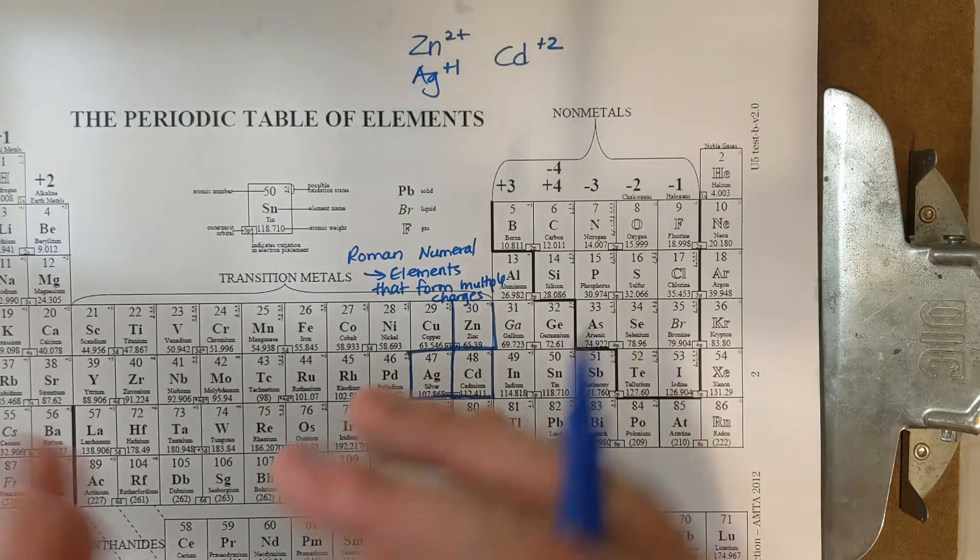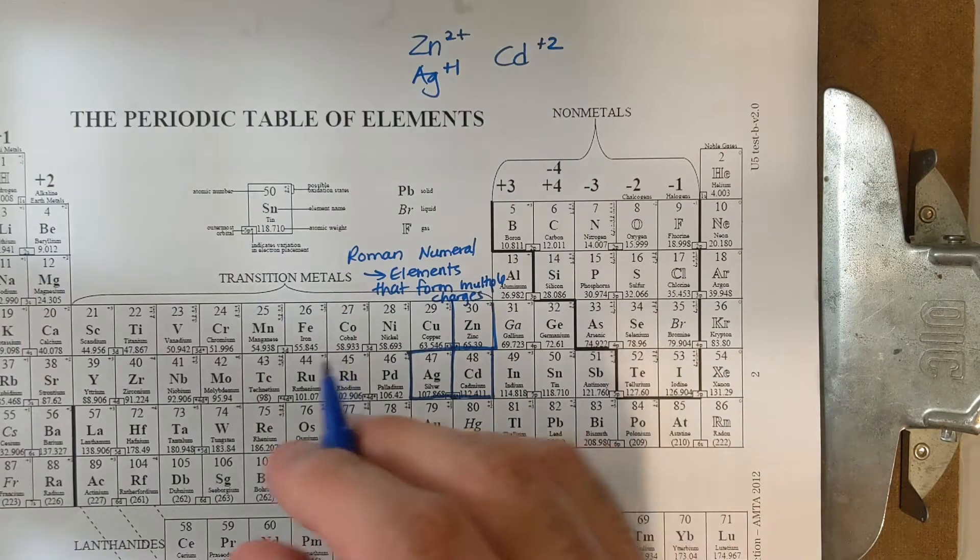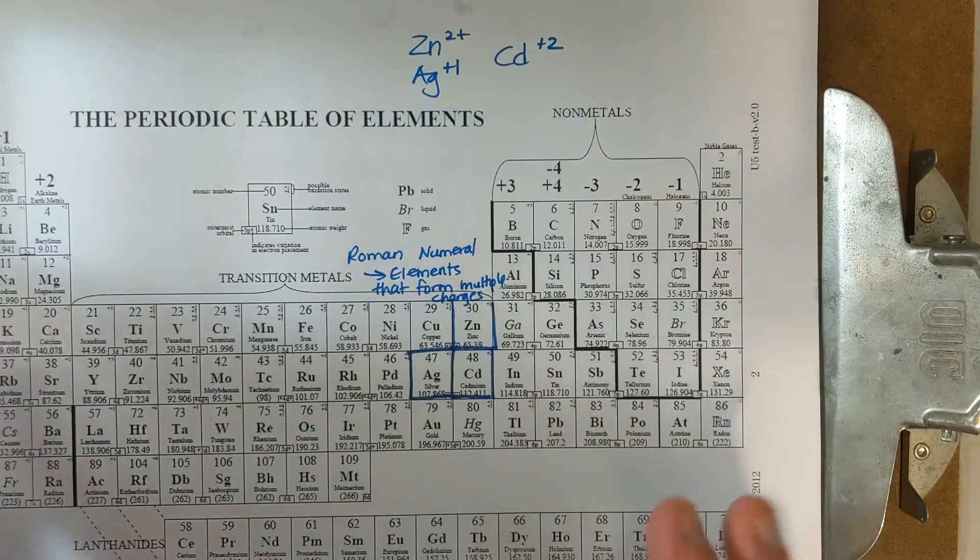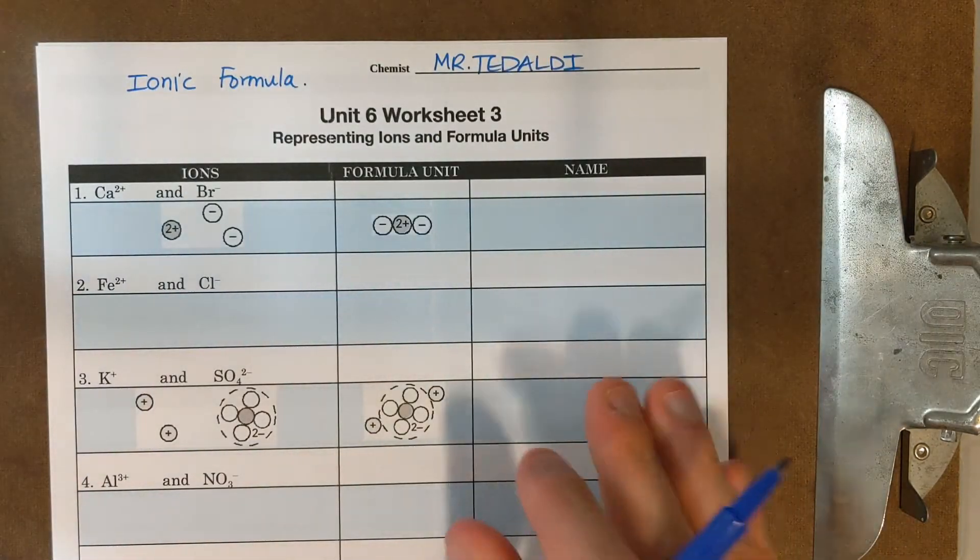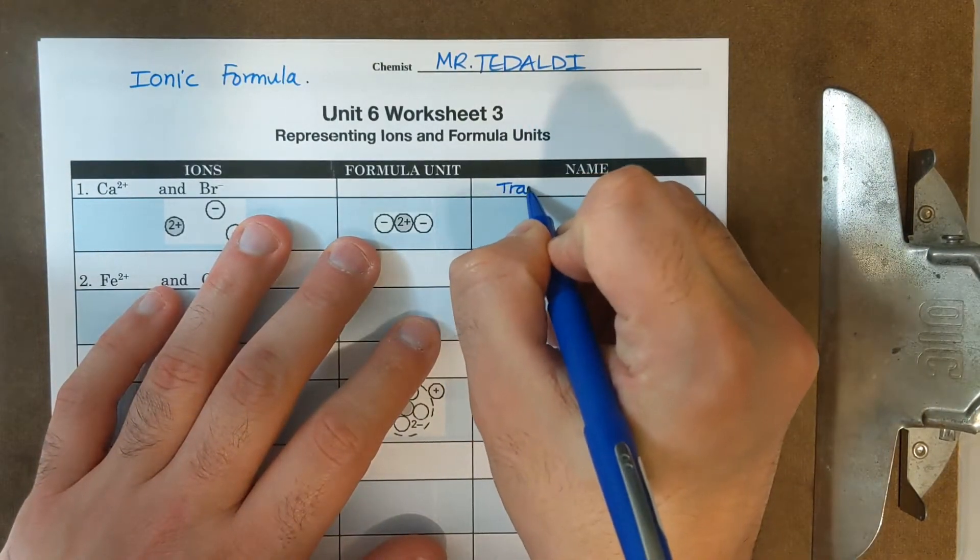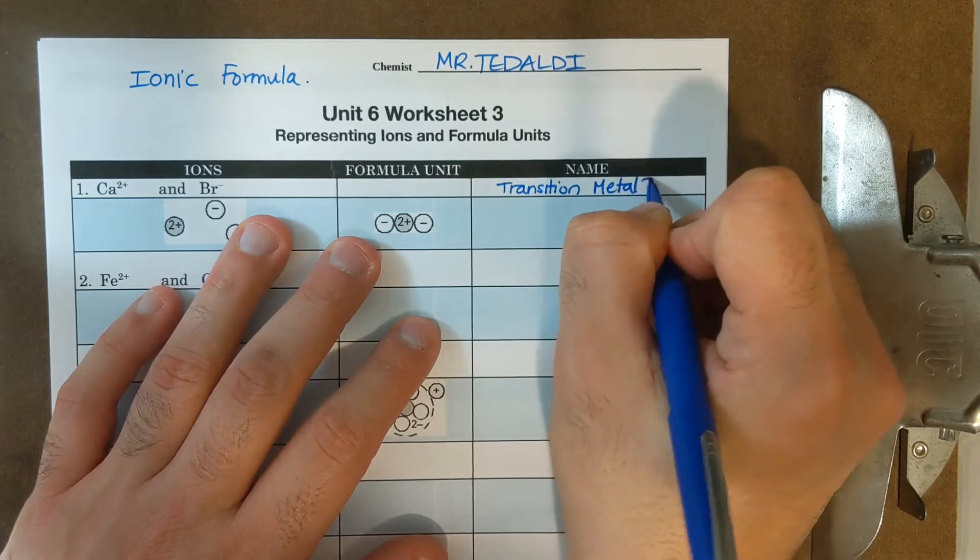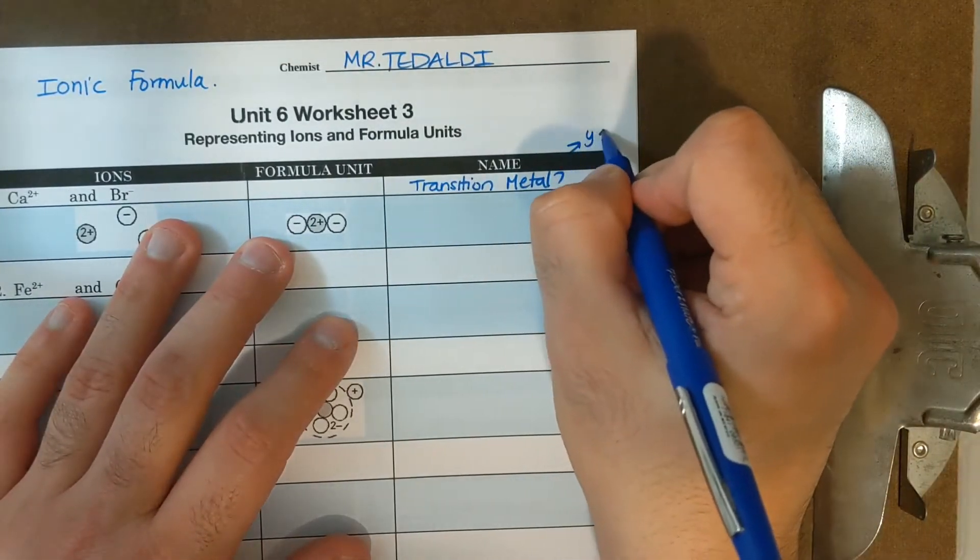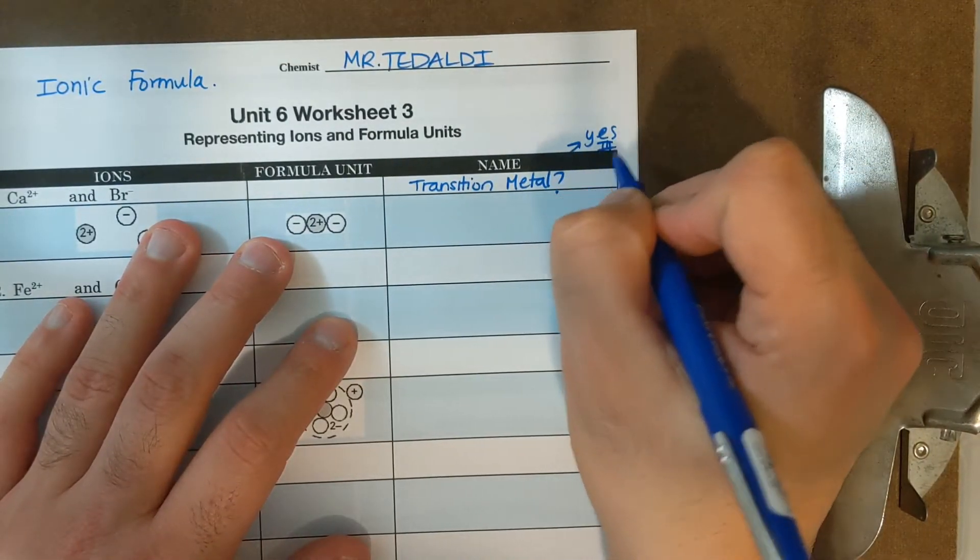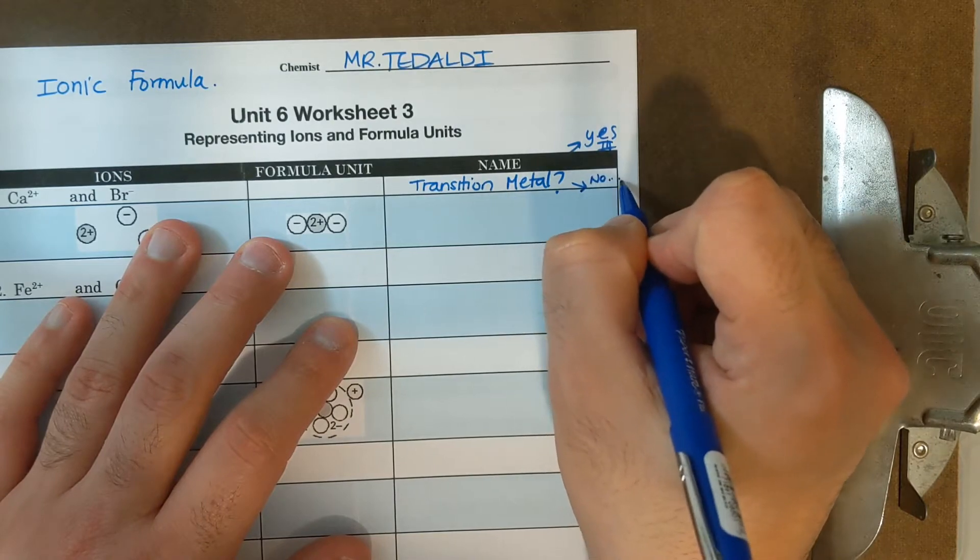Again, the main purpose for the Roman numeral are for elements that form multiple charges. I'm going to ask the question when naming, is it a transition metal? And then I have to figure out from there. So I'm going to put that, for the name, I'm going to put transition metal question mark. And if it's a yes, I need Roman numerals. If it's a no, it's good to go.